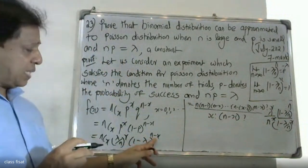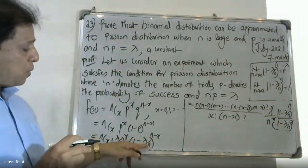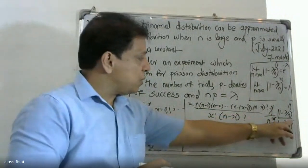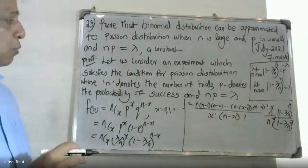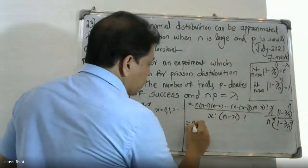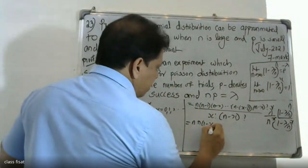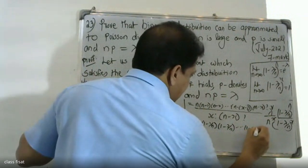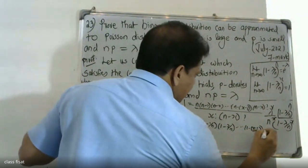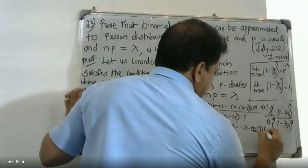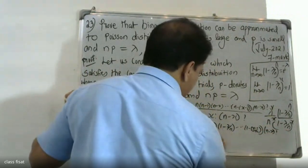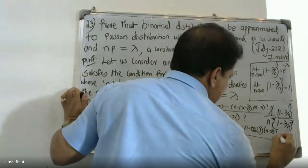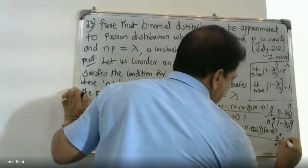This expression has the numerator terms 1 minus lambda by n, and we can separate it as: lambda raise to x divided by n raise to x, times 1 minus lambda by n raise to n, times 1 minus lambda by n raise to x, all divided by x factorial, with the n minus x factorial terms cancelling.